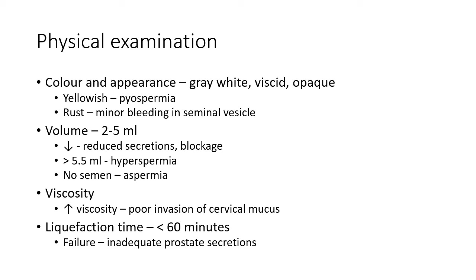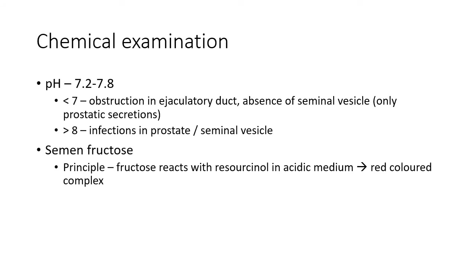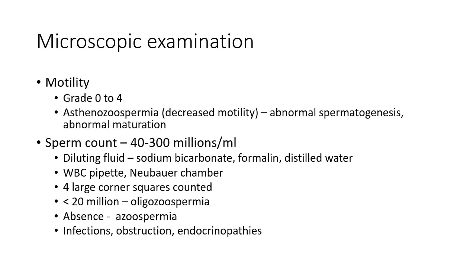For chemical examination, the pH is determined — normal pH is 7.2 to 7.8. pH less than 7 indicates obstruction in the ejaculatory duct or absence of seminal vesicles; pH greater than 8 indicates infections in the prostate or seminal vesicle. Semen fructose is quantified: fructose reacts with resorcinol in a strong acidic medium to give a red-colored complex, which is compared with a known fructose standard.